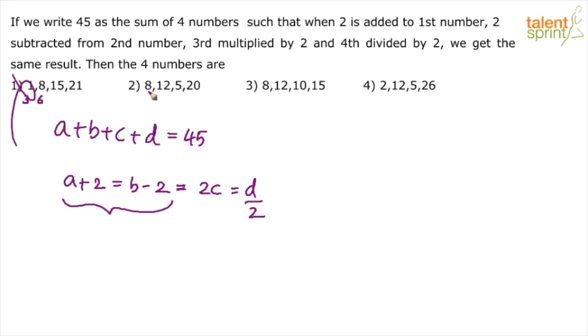Look at second option. First number plus 2, 10. 8 plus 2, 10. Second number minus 2, 10. These are equal. So the first condition is satisfied. Let's multiply the third number by 2. 5 into 2. Third number should be multiplied by 2, right? 5 into 2, 10. Fourth number divided by 2, 20 by 2, 10. Yes. All these are equal. Yes or no? So the second condition is satisfied that first number plus 2, second number minus 2, third number multiplied by 2, fourth number divided by 2 should give you equal result. Let us quickly check the sum. 8 plus 12, 20. 20 plus 5, 25. 25 plus 20, 45. Yes. This condition also is satisfied. So option 2 is your answer.